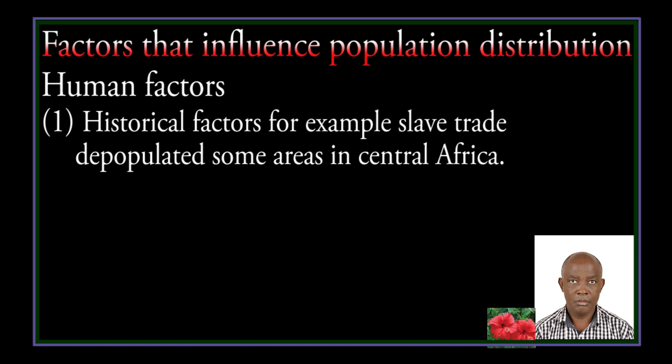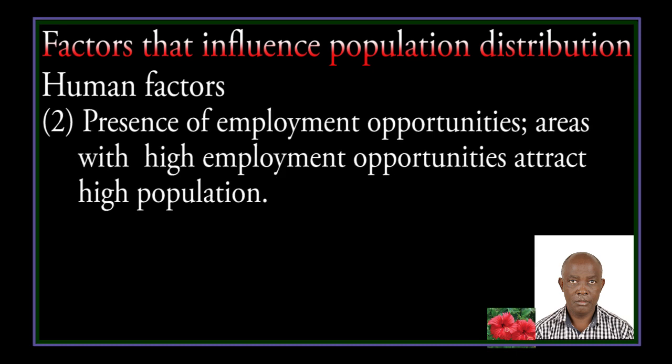Factors that influence population distribution — human factors. Historical factors: for example, fields that have high population. The types of fields increase population. Areas with high employment opportunities attract high population.